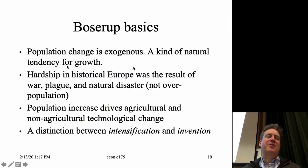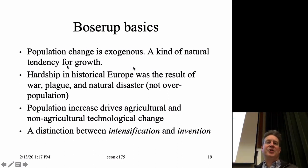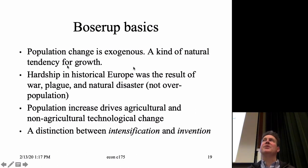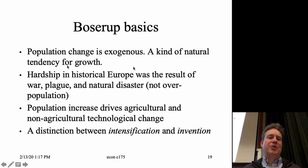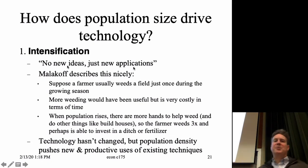Boserup doesn't really think much about where population change comes from — it's just a natural tendency for growth. She views the hardship in historical Europe that Malthus was writing about as really just the result of exogenous factors like war, plague, and natural disasters — not any kind of overpopulation. She views technology as something that adapts to what the population requires in markets. So population increase drives agricultural technological change.